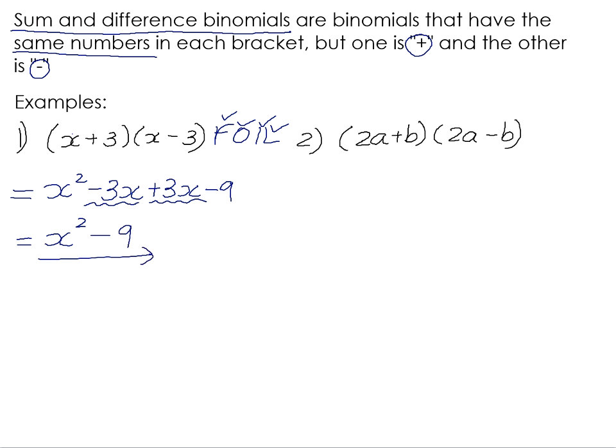So when you see a sum and difference bracket, when they are absolutely identical except the one has a plus and the other has a minus, we know that the outers and the inners are always going to add up to zero. And so we can actually save ourselves a little bit of work by not even worrying to multiply them. So when we have sum and difference brackets, we actually only need to multiply the first and the last.